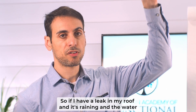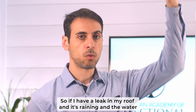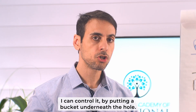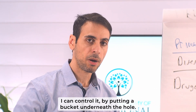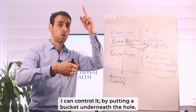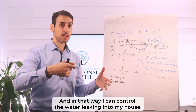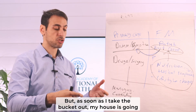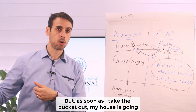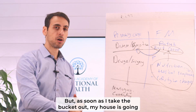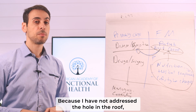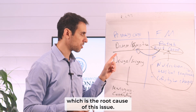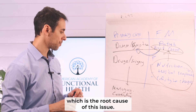Think of it this way: if I have a leak in my roof and it's raining and water is dripping down into my living room, I can control it by putting a bucket underneath the hole. In that way, I can control the water leaking into my house. But as soon as I take the bucket out, my house is going to get wet, because I have not addressed the hole in the roof, which is the root cause of this issue.